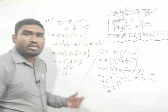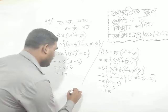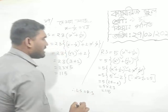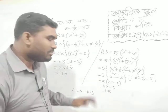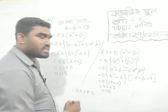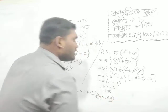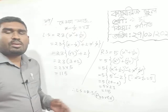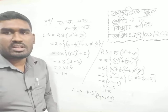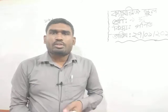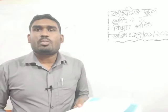So 23 equals 5. Left side equals right side. We have to write this proof. We will write it in the commerce. We will write it. x to the power of 6 plus 1 by x to the power of 6.